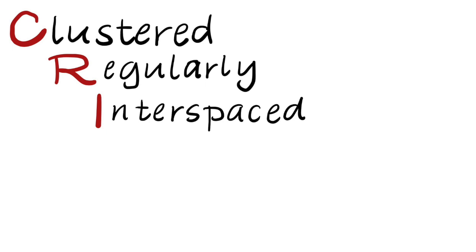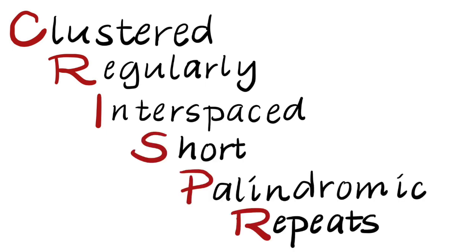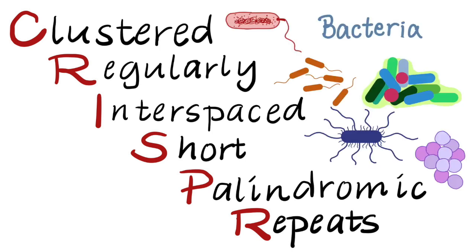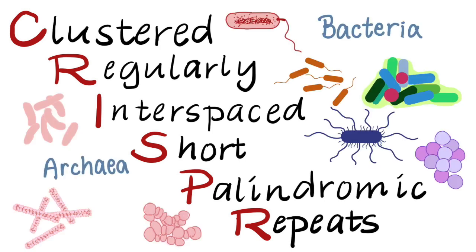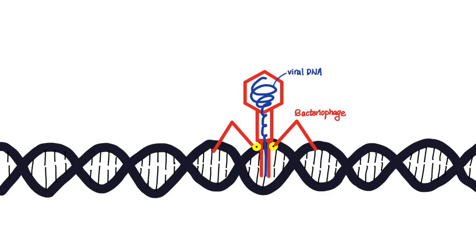CRISPR is short for clustered regularly interspaced short palindromic repeats. It was originally found in the immune systems of bacteria and archaea, and it works by storing short fragments of foreign sequences, protospacers, into its own genome to protect itself against invading viruses and plasmids.